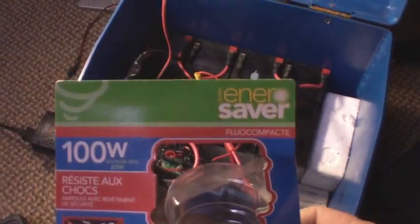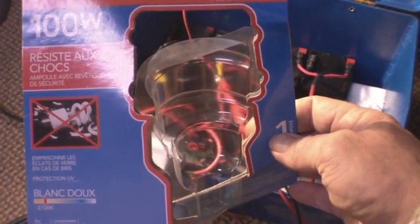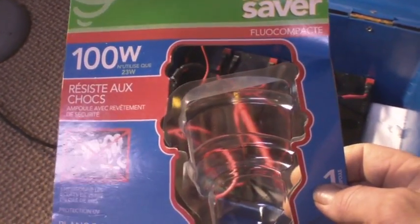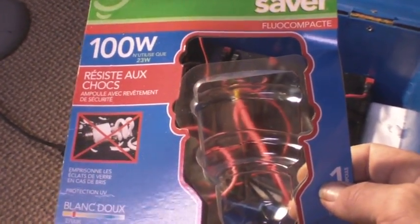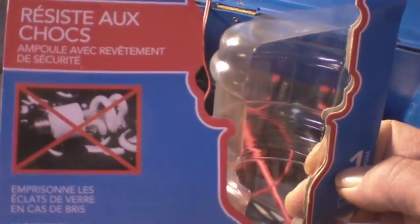This light bulb, these are the ones I go with. Okay, EnerSaver, a Walmart product. They have a plastic coating so that if you break the light bulb it doesn't go everywhere. You can see a little logo there.